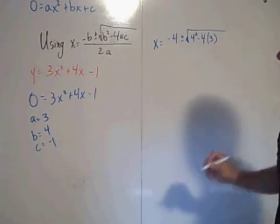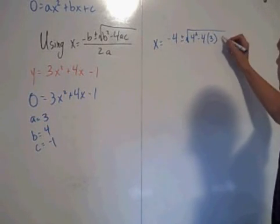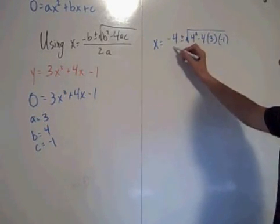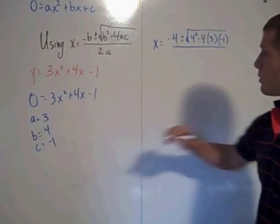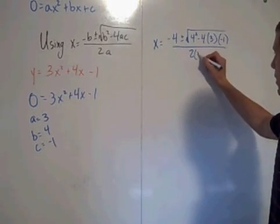Times c, and c is negative 1. So this is all over twice a, so 2 times 3.